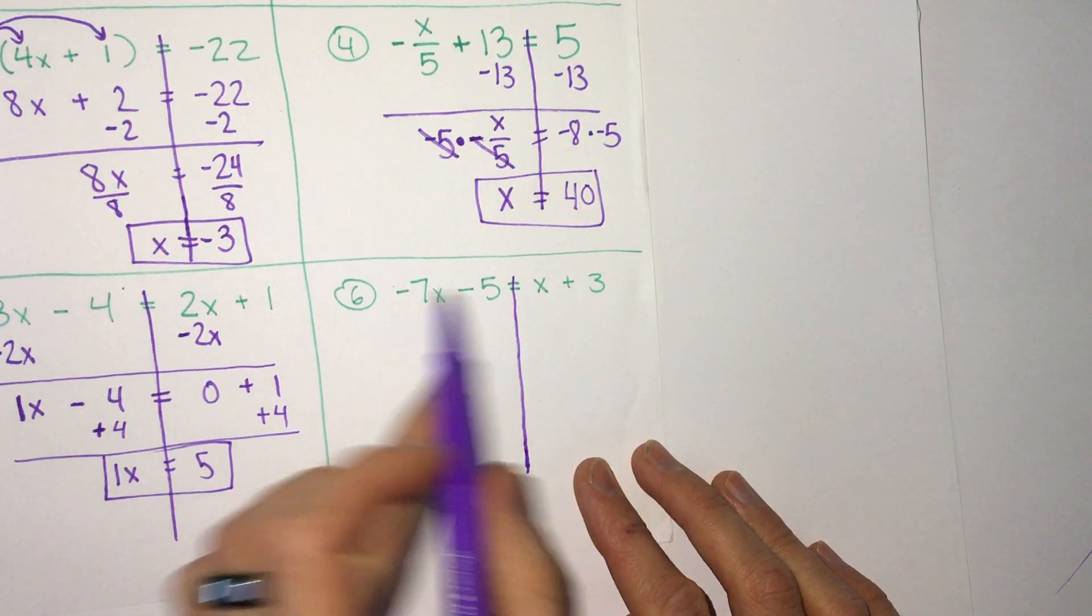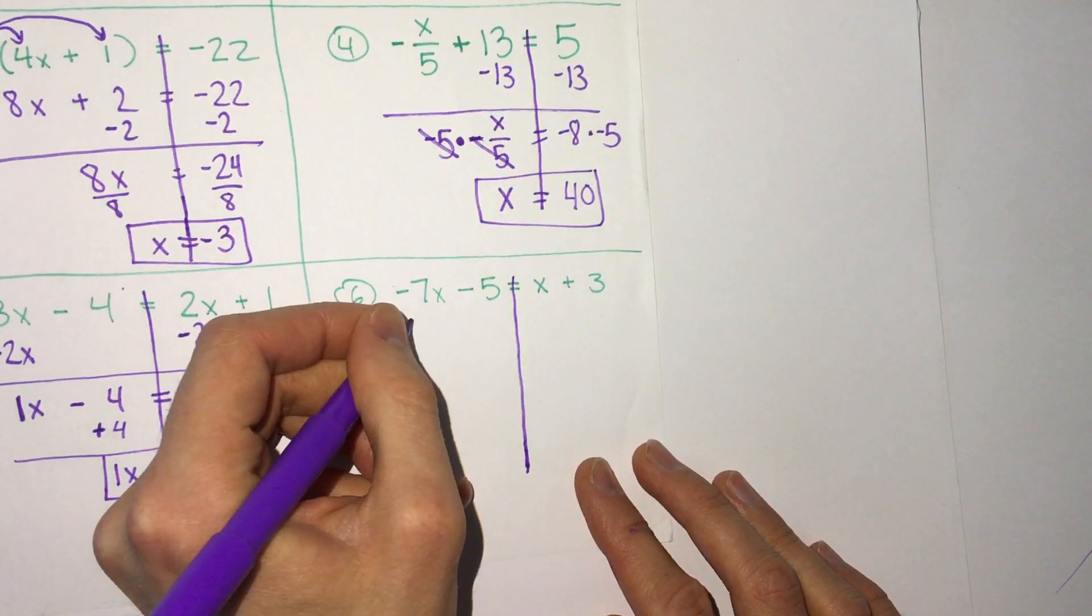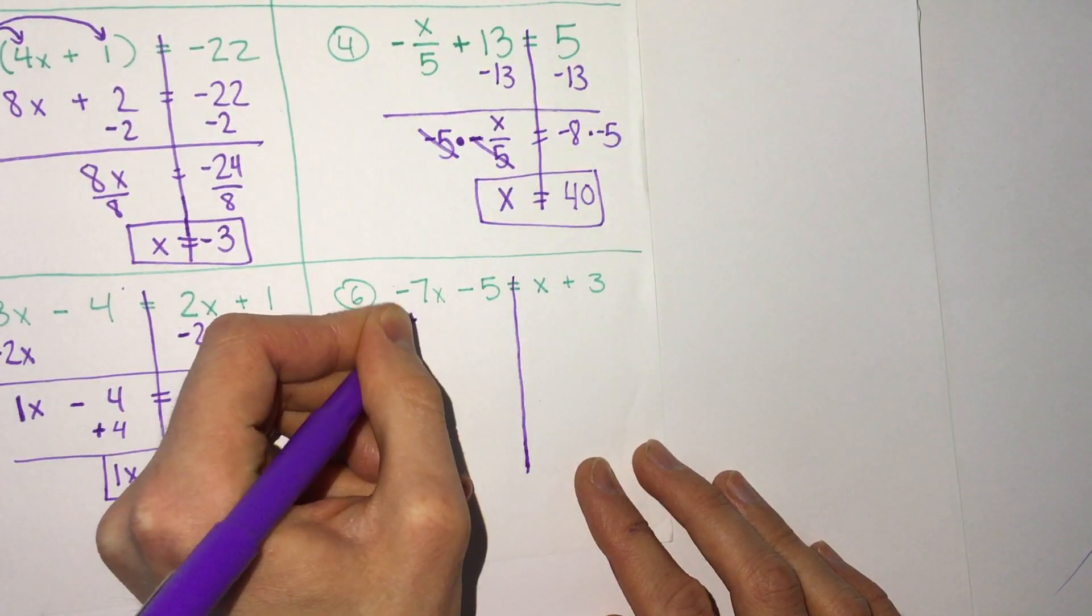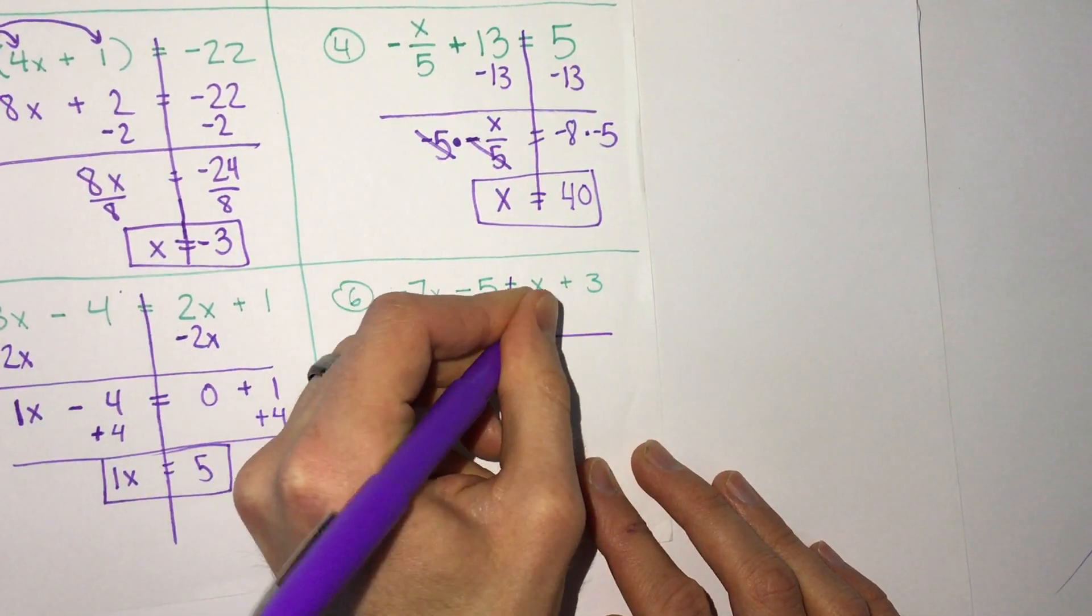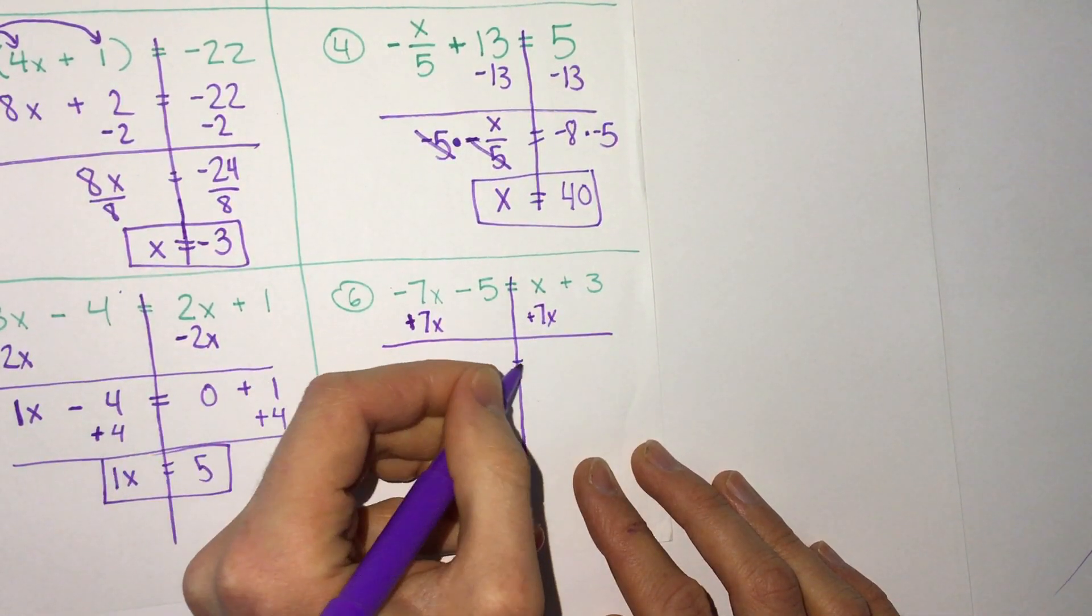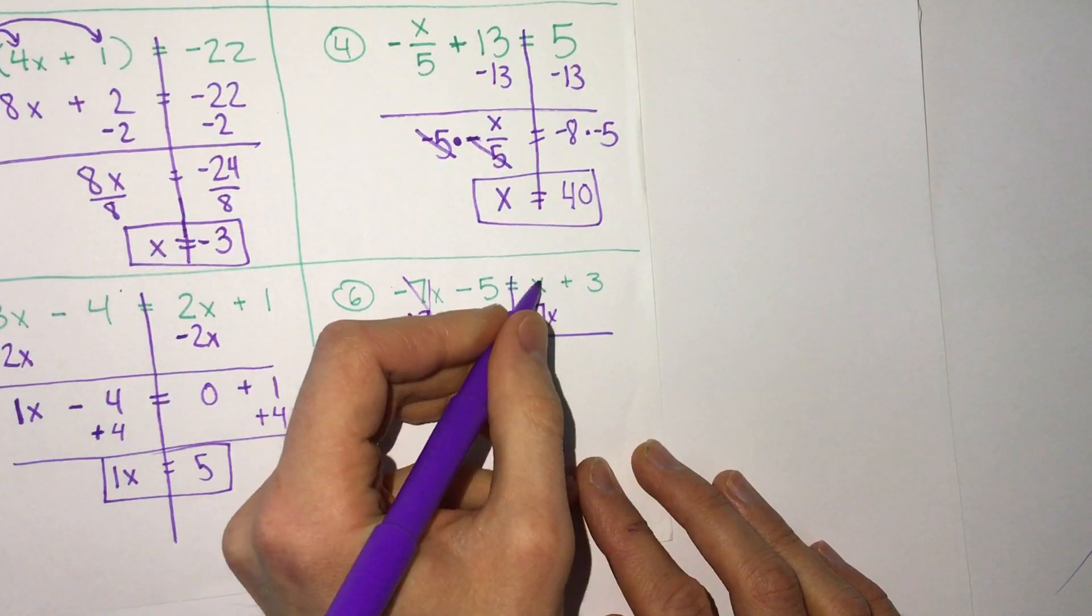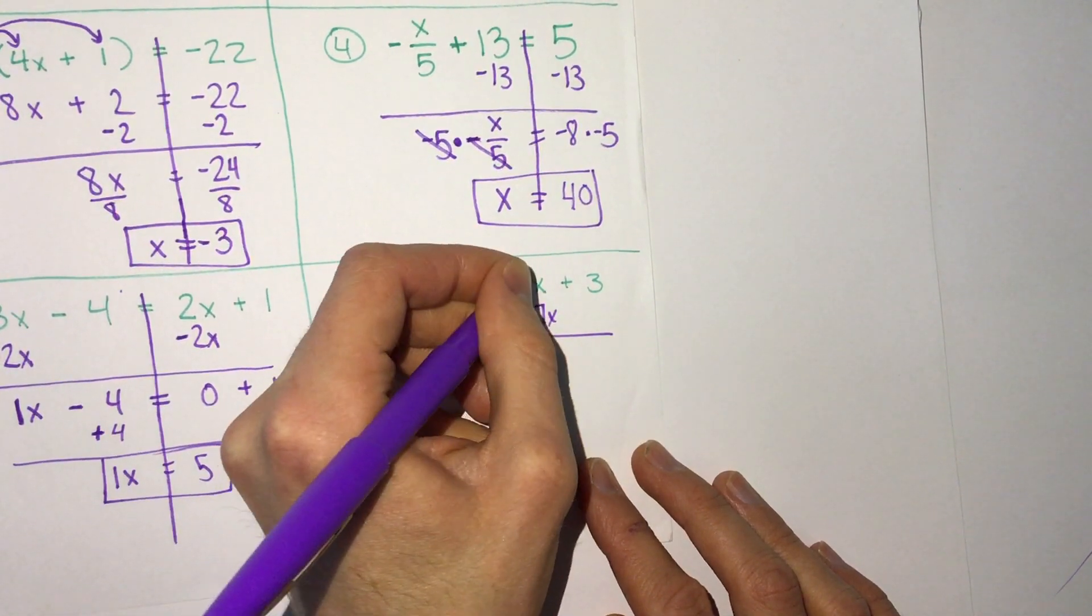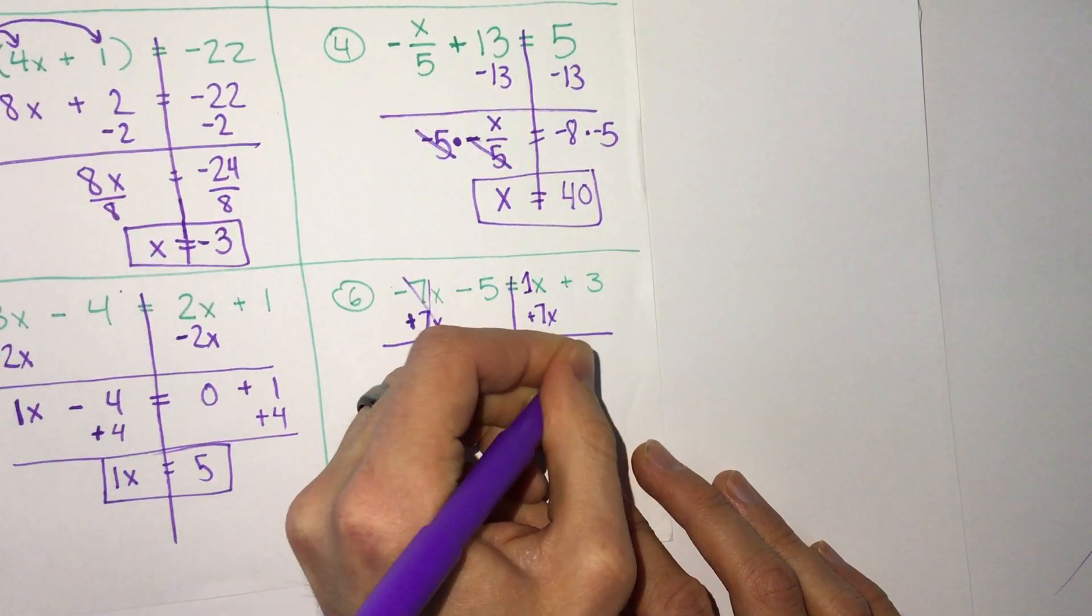So there's two ways you can do this depending which side you bring x's to. I like having positives, so I'm going to take negative 7x and add 7x. And I have to do that to both sides. So these cancel. So we're just left with negative 5. It's x plus 7x. So that's 1x plus 7x is 8x plus 3.